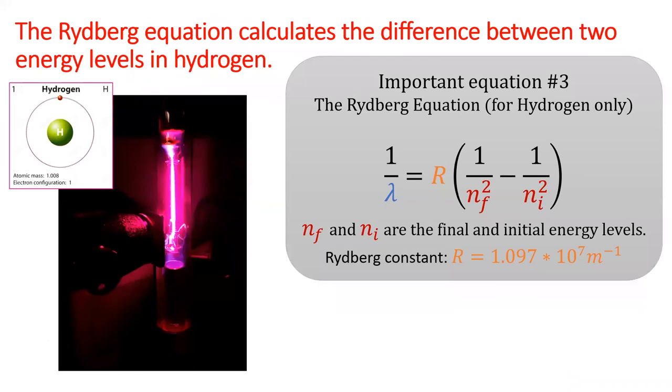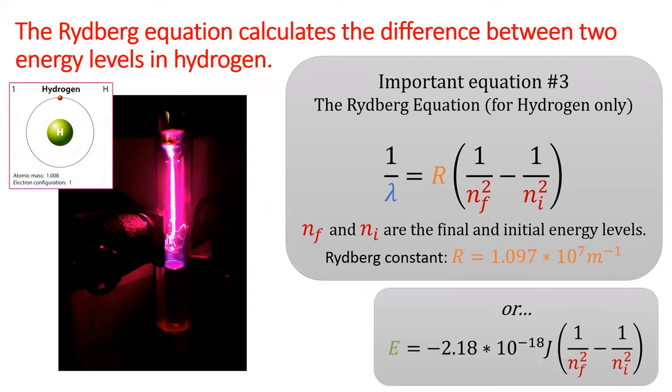All right, it's time to introduce important equation number three, the Rydberg equation. The Rydberg equation can be used to calculate the wavelength of a photon from the energy levels in the hydrogen atom. There is another form of the Rydberg equation which calculates the energy difference between the energy levels. You'll be given both forms of the Rydberg equation anytime you need to use them on an exam.